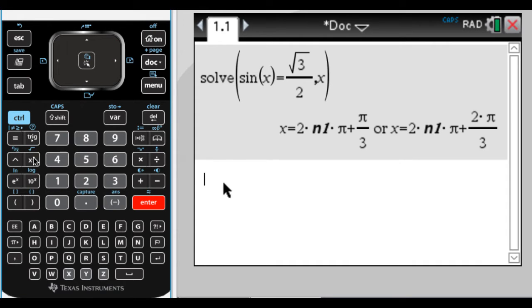And you can see it gives me the solutions. So it's writing it as x equals two times n1 times pi plus pi over three. So that's really, we would have written that as pi over three plus two pi n. And then two pi over three plus two times pi times n is how we would have written it. Calculator goes with two n1 times pi.